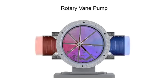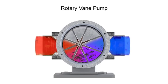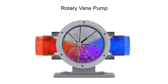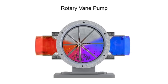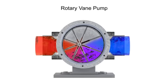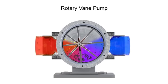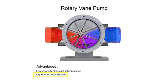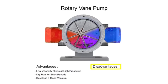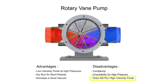Fluid enters at the largest chamber. As the vanes rotate and retract, the chambers get smaller, forcing fluid to exit through the discharge port. The advantages of vane pumps are that they can handle low viscosity fluids at relatively higher pressures, can dry run for short periods, and develop a good vacuum. Their disadvantages include complexity and unsuitability for both high pressure and high viscosity fluids.